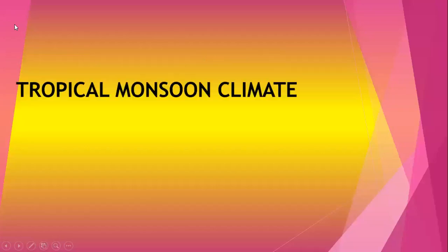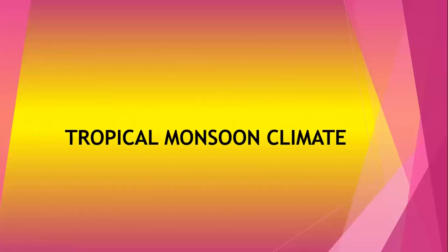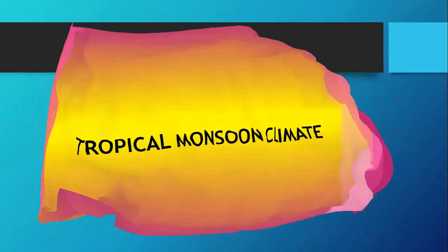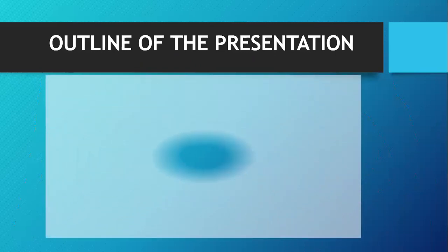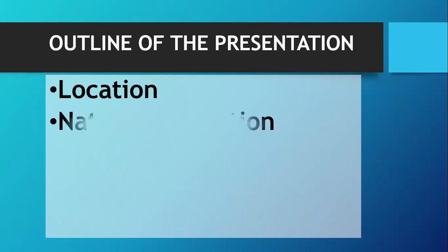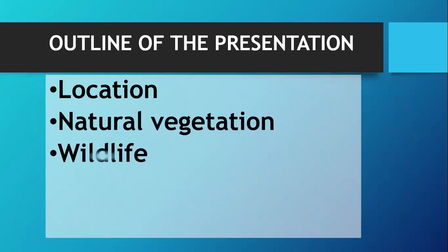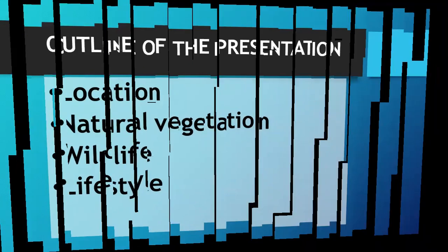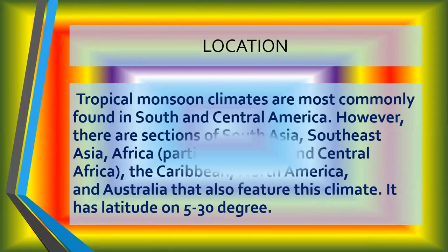Good morning everyone. Today we and our group are going to present about tropical monsoon climate. First of all, here is the outline of the presentation. We are going to talk about location, then natural vegetation, then wildlife, and at last we are going to tell about lifestyle. Now to present about location, I want to call here Novin.